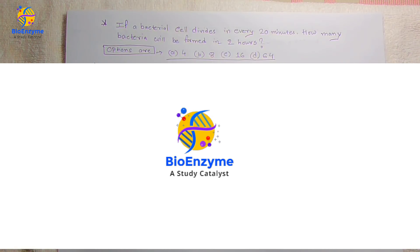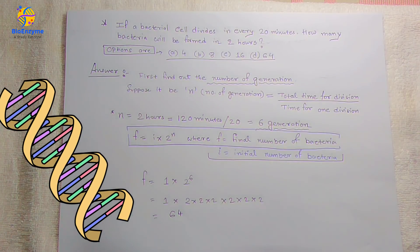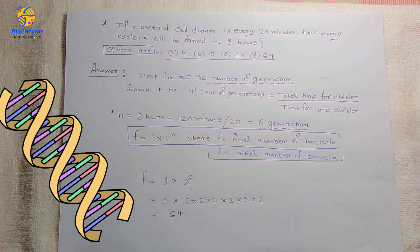First, we have to find the number of generations. We take the number of generations as n. The formula is: n equals total time for division divided by time for one division. This is a very unique and simple formula.